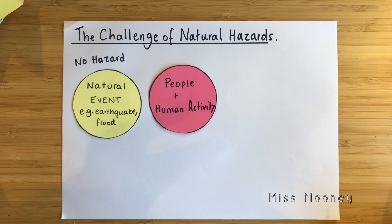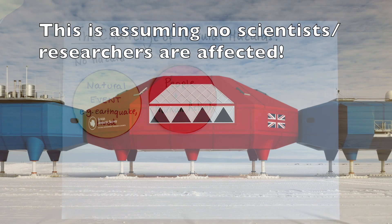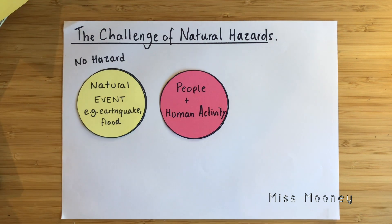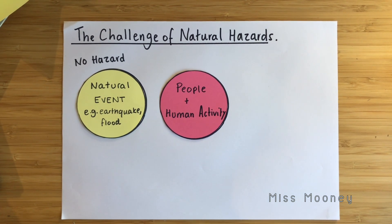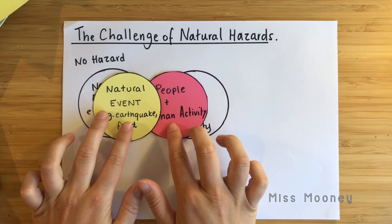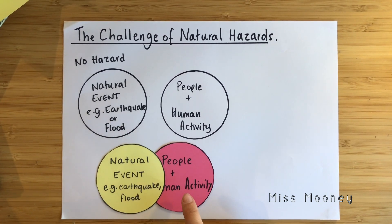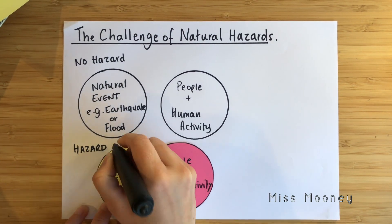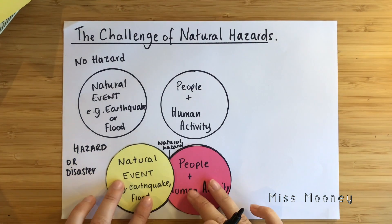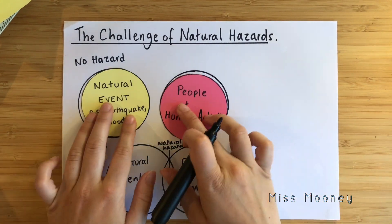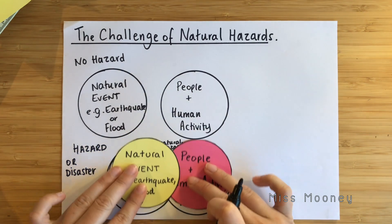For example, if there was a massive earthquake in Antarctica, people and human activity wouldn't be affected, so it's not deemed a hazard. However, when natural events and people and human activity suddenly merge together and there is an overlap — if there is an earthquake in an area where there are people or human activity — this is when it becomes a hazard or a disaster.